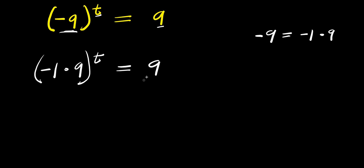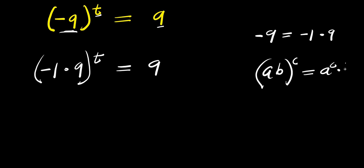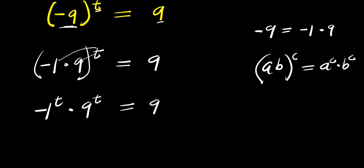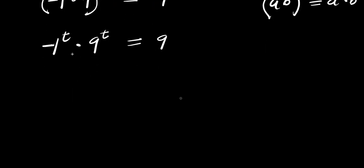What we are going to do is make use of this identity: if you have a times b raised to the power of c, this equals a to the power of c times b to the power of c. So I'm going to distribute this exponent to each of the terms, giving negative 1 to the power of t times 9 to the power of t, and this equals 9.